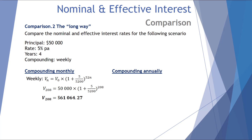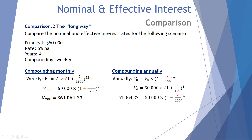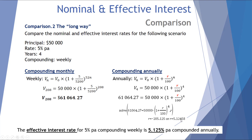In this scenario we have a principal of $50,000, a rate of 5% per annum over four years, but compounding weekly. The expected return is $61,064.27. Using the TI-Inspire CAS calculator solve function to find what annual interest rate returns the same value over four years, the effective interest rate is 5.12458% — so the effective rate for 5% per annum compounding weekly is 5.125% per annum compounded annually.